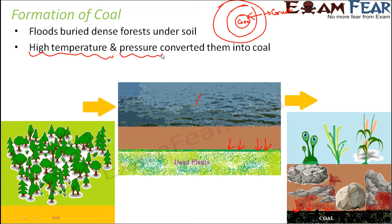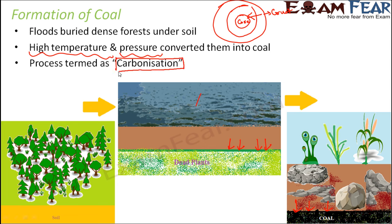So this is how coal was formed. And this entire process of coal formation is called carbonization. Why is it called carbonization? Because it derived the name from carbon — the carbon content in coal is very high. So it is called carbonization.